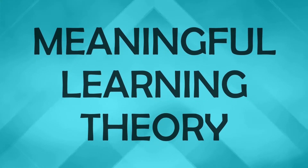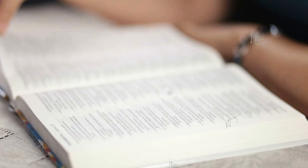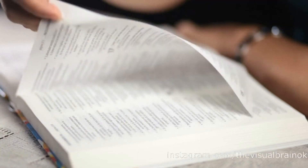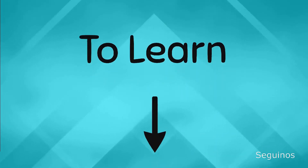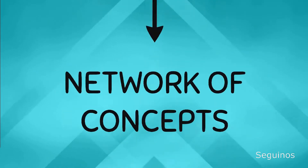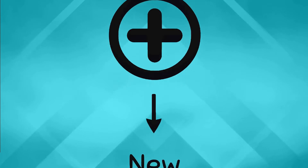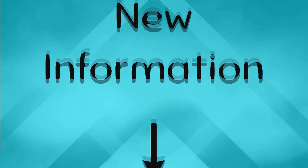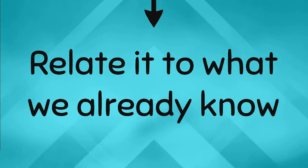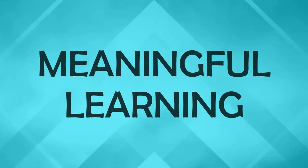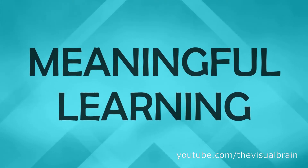Ausubel's meaningful learning theory considers that learning new knowledge is based on what is already known. In order to learn, we create a kind of network of concepts in which we add new information and relate it to what we already know. This is what we know as meaningful learning. But before diving into it, let's look at other important concepts in Ausubel's theory.